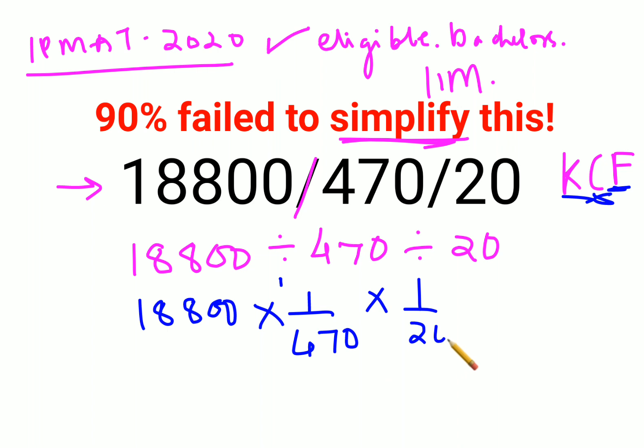Now if you see, things are cancelling. The zeros are cancelling, the ones are cancelling, 94s are cancelling, 47s and twos are cancelling. So the answer for this simplification is just two.